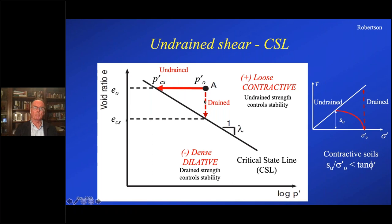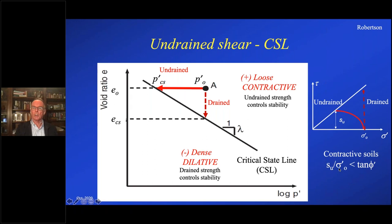If you look at a sample on the loose side — if it's loaded drained, it would contract towards critical state. But if it's loaded in an undrained manner, there's no volume change, no void ratio change. So that tendency to contract creates a buildup of pore pressure, which decreases the effective stress, and the effective stress path moves horizontally towards critical state. On the right-hand side I've got a simplified strength envelope diagram, where if loaded undrained, you build pore pressure and the stress path curves over towards critical state, giving an undrained strength at critical state. For contractive soils, the undrained strength ratio is less than the tangent of the friction angle.